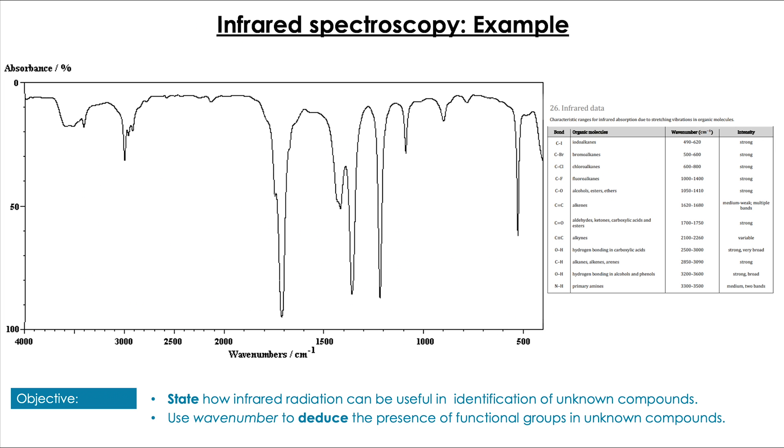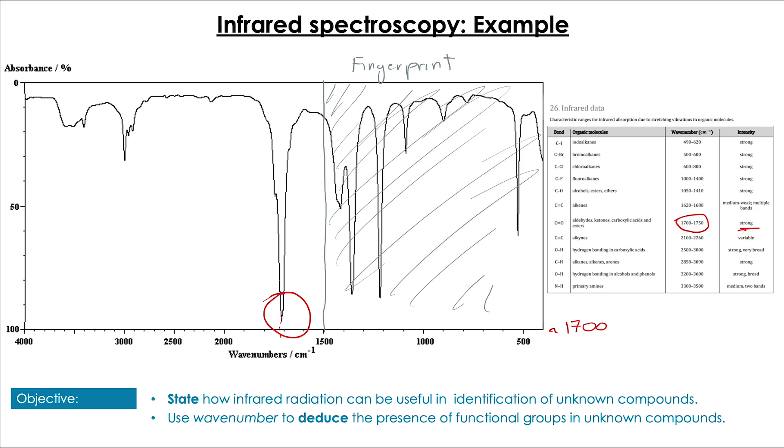So here we have a typical example of a spectra and I've also included table 26 from the data book although you may want to have that data book also open alongside. So we're not going to occupy ourselves with the fingerprint region kind of below 1500 we're going to focus on what we can see beyond that. So the first thing we see is a strong peak just beyond 1700 between 17 and 1750. And if we look at table 26 then a strong peak in that area indicates a C double bond O that could be part of an aldehyde ketone or carboxylic acid. It's not necessarily clear which one but we do know that that is present.